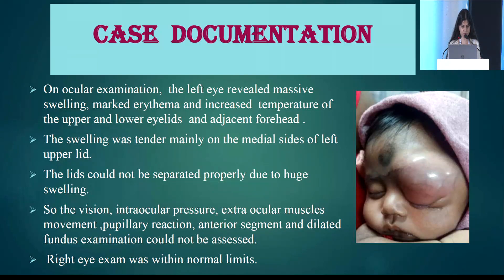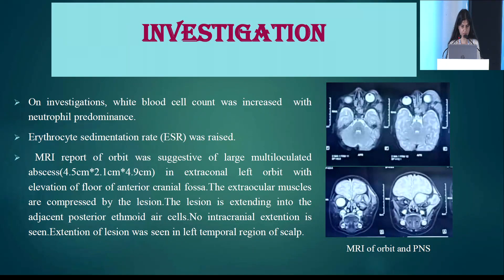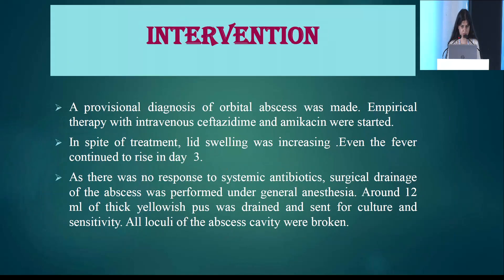The right eye examination was within normal limits. On investigation, WBC count was increased with neutrophilic predominance, and ESR was raised. MRI report of the orbit was suggestive of a large multiloculated abscess in the extraocular left orbit with elevation of the floor of the anterior cranial fossa. The extraocular muscles are compressed by the lesion. The lesion is extending into the adjacent posterior ethmoidal air cells. No intracranial extension is seen, but extension of the lesion is seen in the left temporal region of the skull.